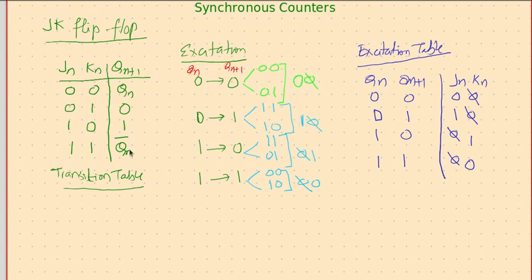Third possibility, 1 to 0: yes, there is toggle action required so 1,1, and it can be reset so 0,1. So it says J can be anything but K should be 1.